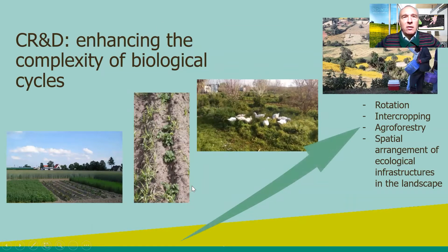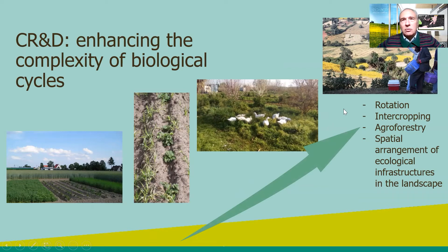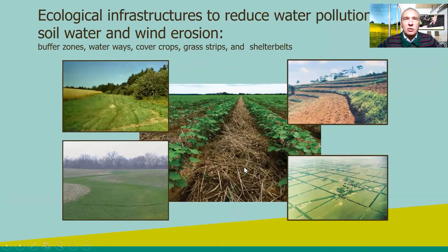The first result of the workshop was acknowledging that crop rotation and diversification is based on enhancing the complexity of biological cycles through the implementation of different techniques — starting from the field with rotation, intercropping, and agroforestry, passing through the landscape dimension with the spatial arrangement of ecological infrastructure. There is a scale dimension in the practical application of crop rotation and diversification.